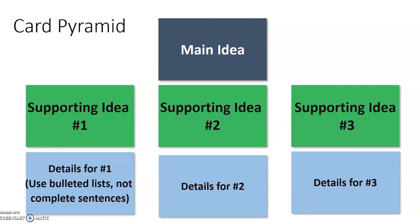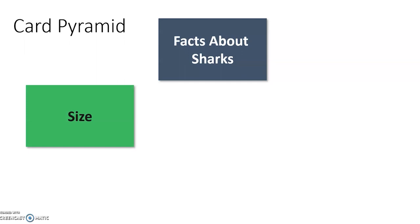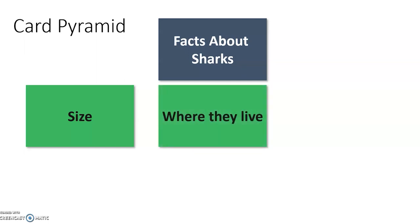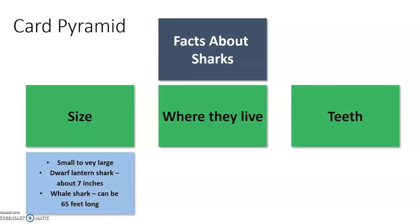So let's think again about our passage. We already got our main idea — facts about sharks. The first thing we talked about was size. Some of the details talked about how they can be really small or really large. It gave us one shark in particular that's tiny — the dwarf lantern shark, about the size of a pencil at almost seven inches long. Then we can also talk about the whale shark — it's so big it can be 65 feet long.